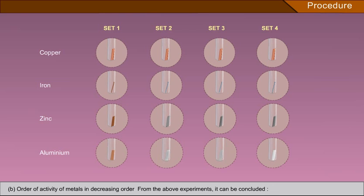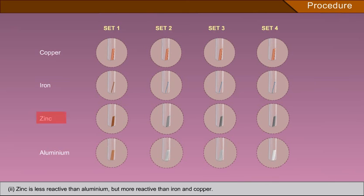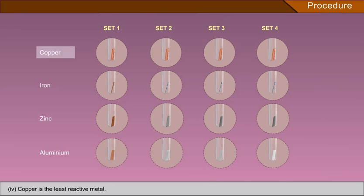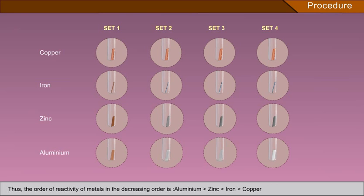Order of reactivity of metals in decreasing order: From the above experiments it can be concluded that aluminium is the most reactive metal; zinc is less reactive than aluminium but more reactive than iron and copper; iron is less reactive than aluminium and zinc but more reactive than copper; copper is the least reactive metal. Thus: Al > Zn > Fe > Cu.